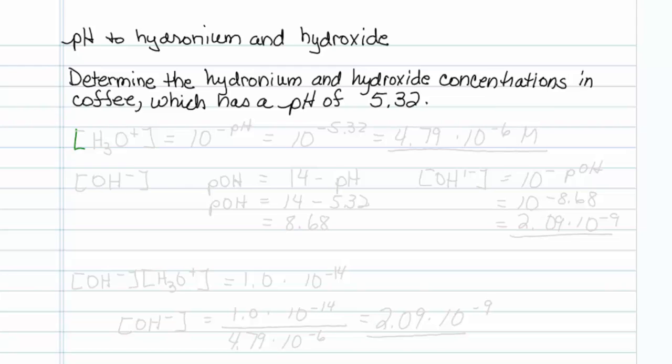The first formula is hydronium is equal to 10 to the minus pH. So that would be equal to 10 to the minus 5.32, which when put into my calculator, turns out to be 4.79 times 10 to the minus 6 molar.